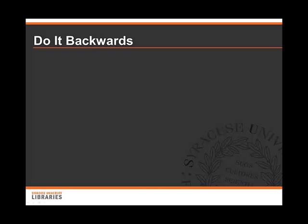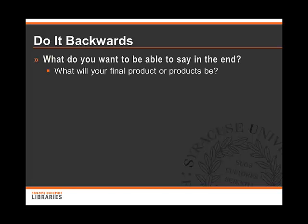So how should you go about planning your research? The most common advice I give to people starting the research process is: do it backwards. Specifically, ask yourself, what do I want to be able to say in the end? Write your conclusion as though everything turned out the way you wanted. So for example, you may want to be able to say, on average, men are taller than women.